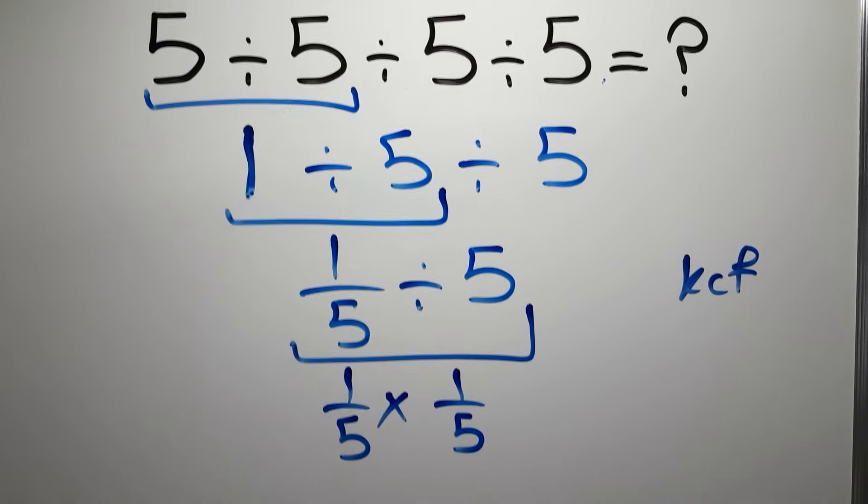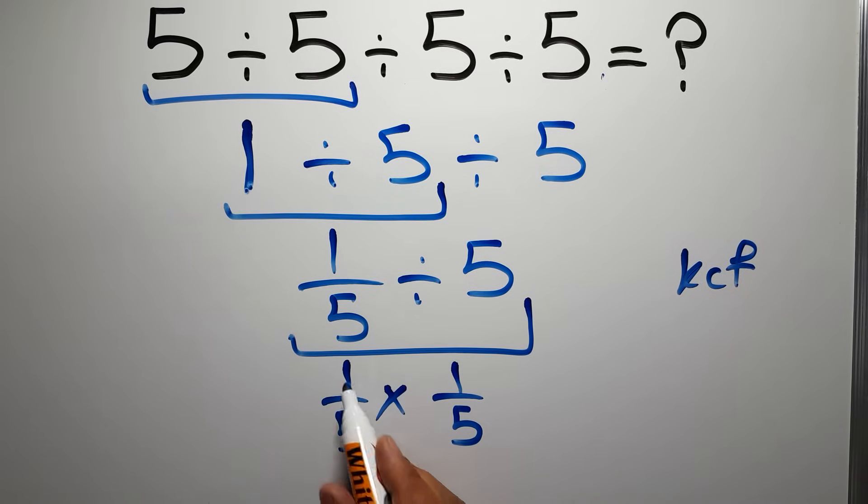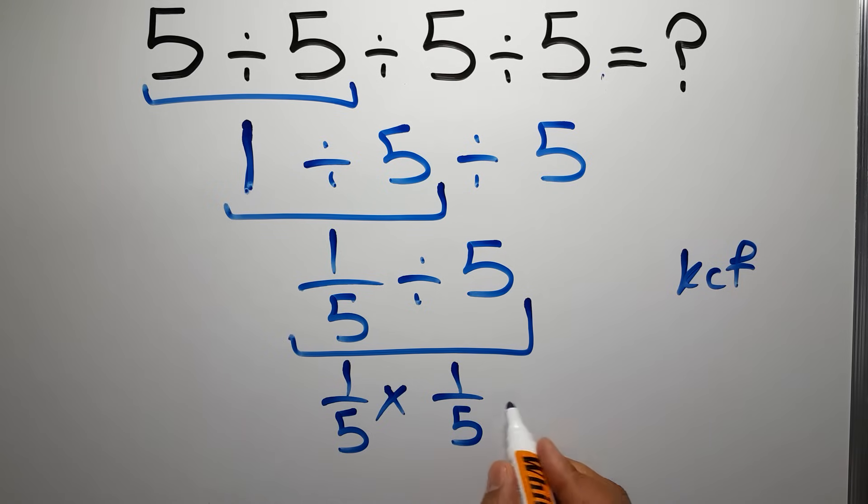So we have 1 over 5 times 1 over 5, which equals 1 times 1 gives us 1, and 5 times 5 gives us 25. So we have 1 over 25, and this is our final answer to this problem.